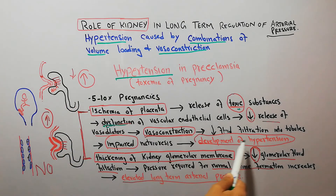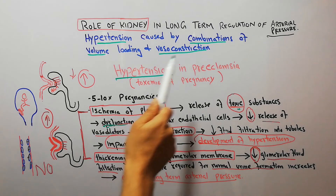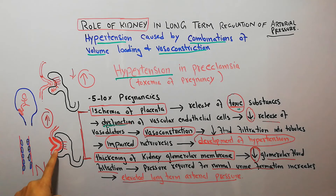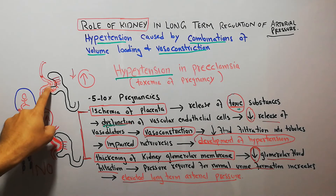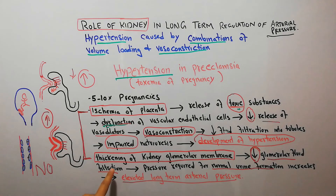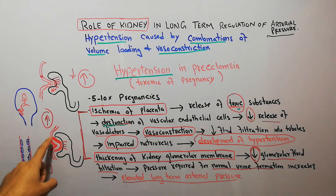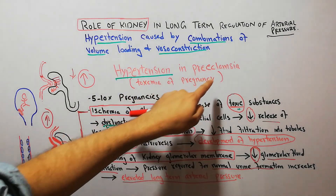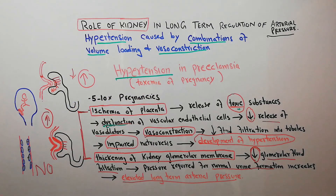The second theory is thickening of the glomerular membrane. When compared to a normal glomerular membrane, the thickened membrane requires more pressure in the glomerular blood vessels to cause filtration because there is decreased glomerular fluid filtration. More arterial pressure over a longer time leads to elevated long-term arterial pressure and hypertension. This is all about hypertension in preeclampsia or toxemia of pregnancy.